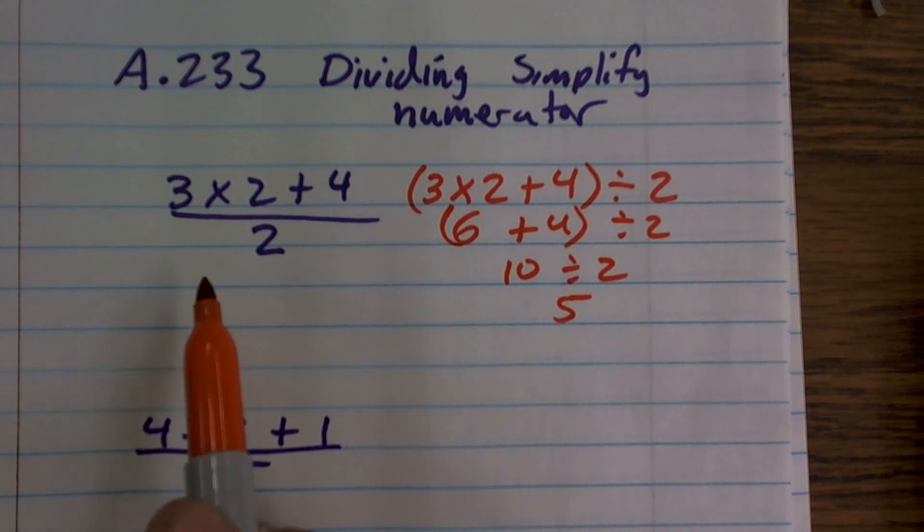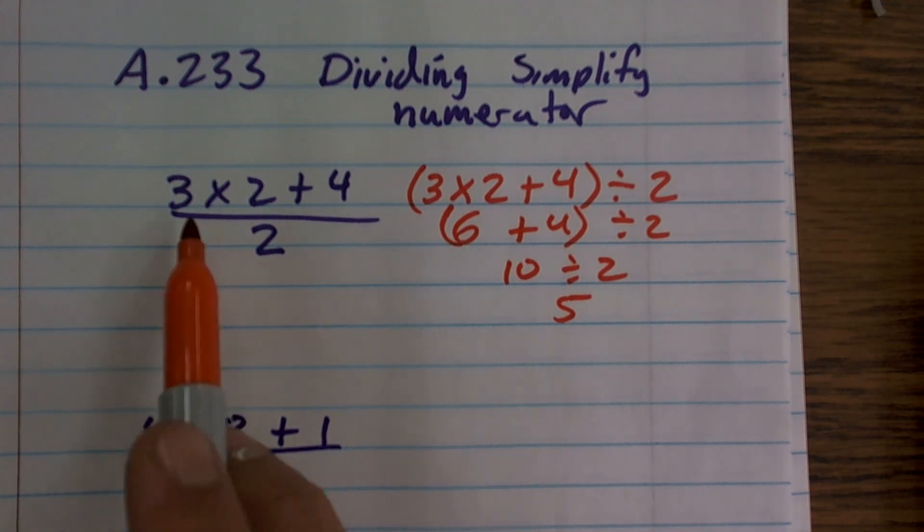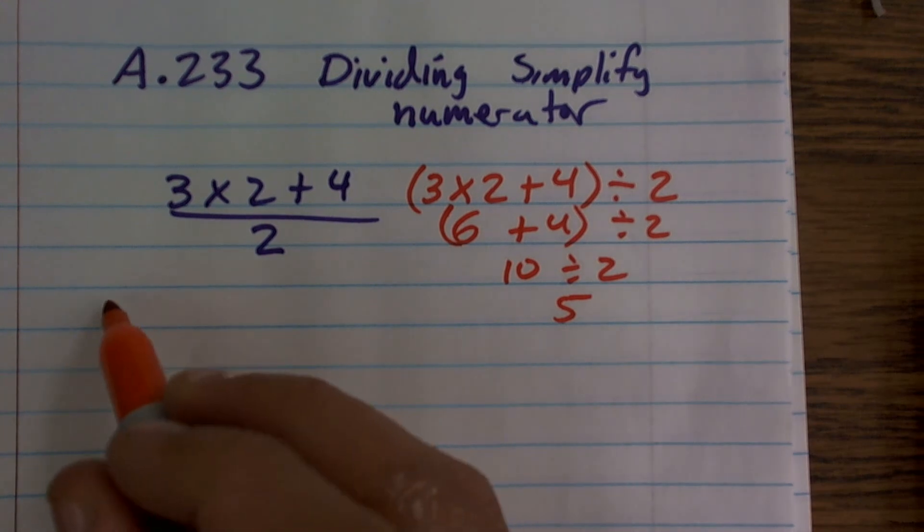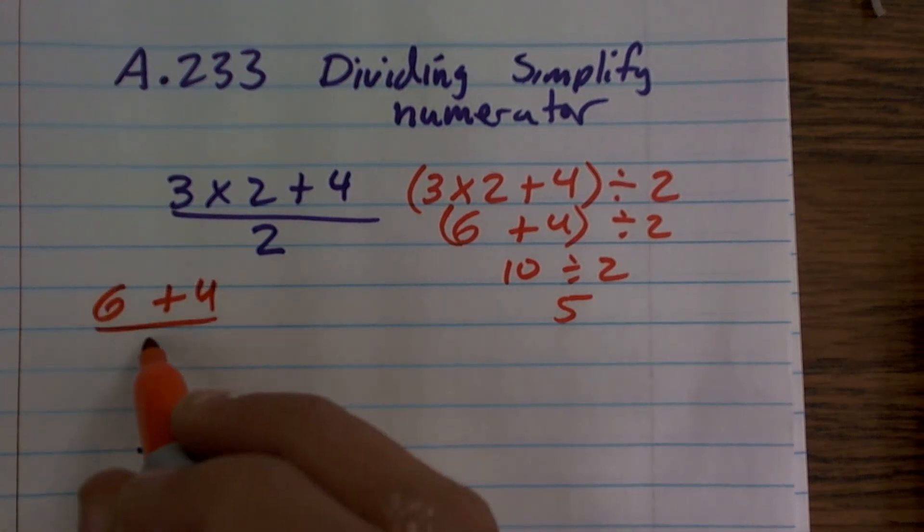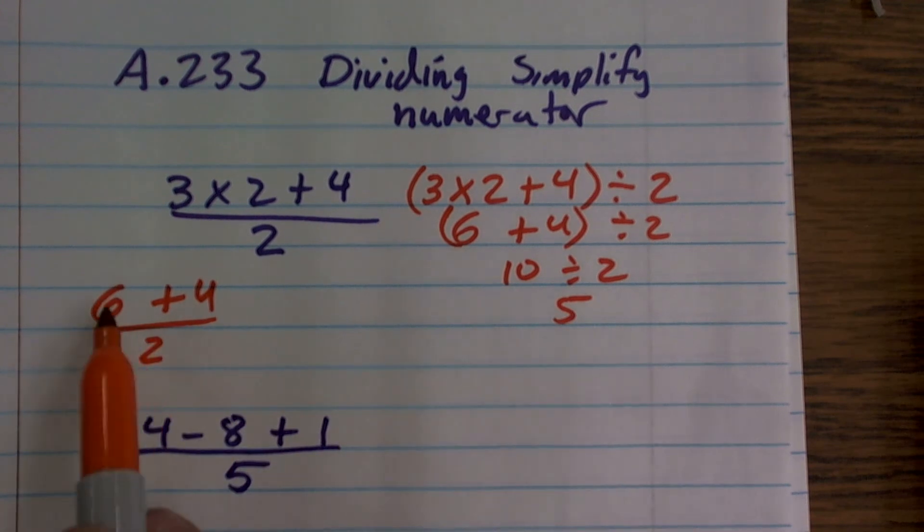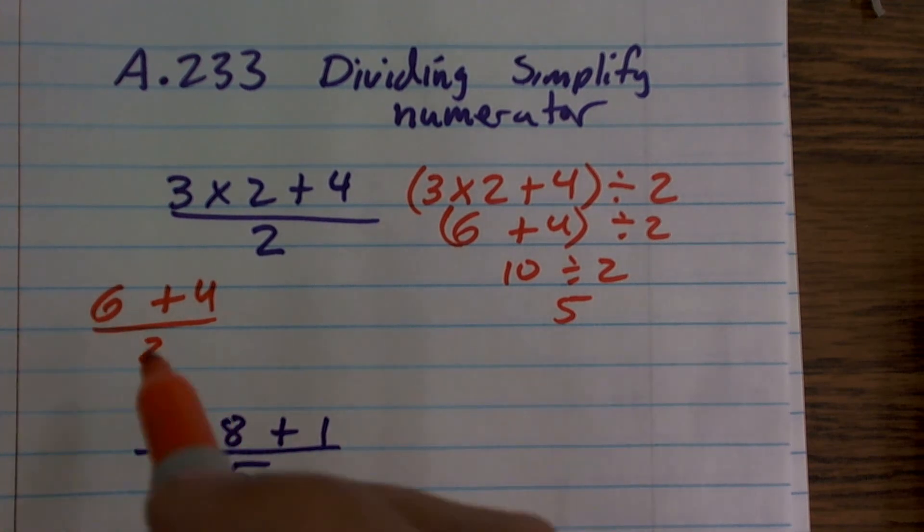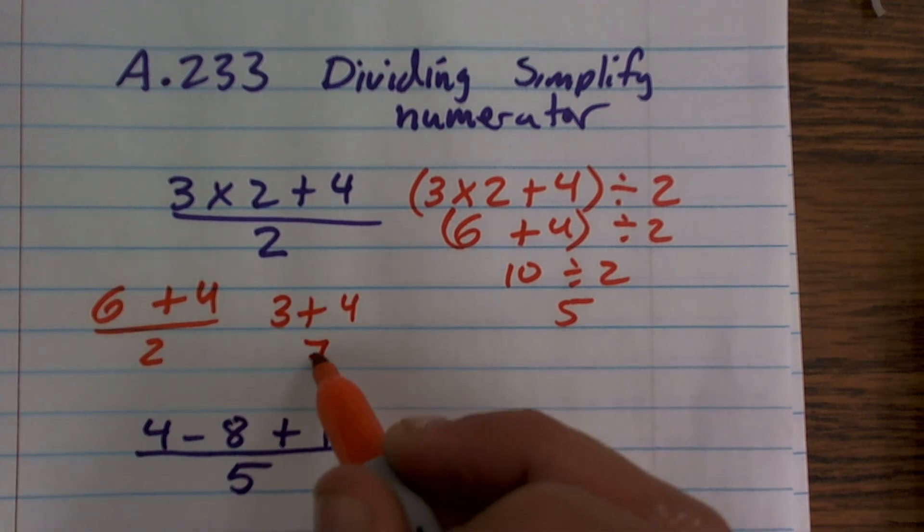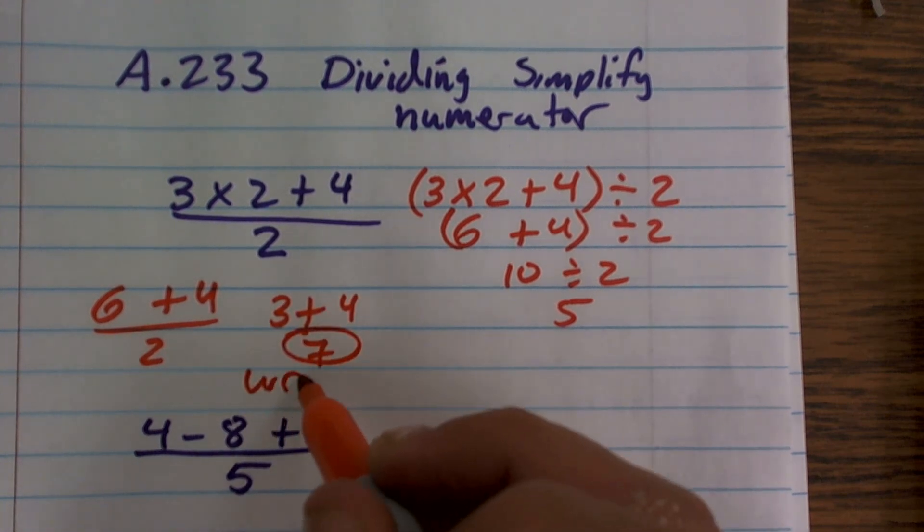Let's do an operation that is common for students. They would probably do 3 times 2, which would be 6 plus 4, divided by 2. Then they say, oh, I have to divide this. So what they do is they divide 6 divided by 2, and they get 3 plus 4, which equals 7, which is wrong.